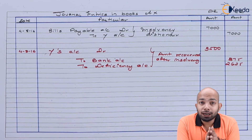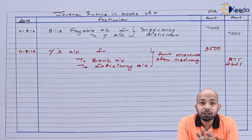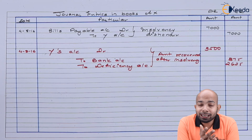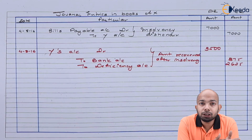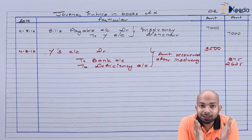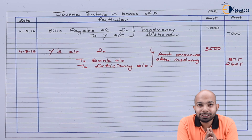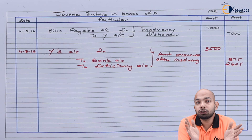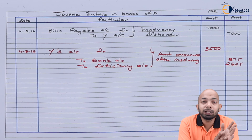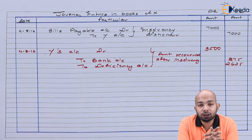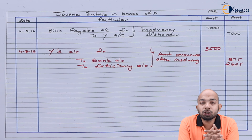I hope this illustration gave you a lot of understanding about how to solve a problem when there is insolvency — especially when the amount is shared between two people — and how to go about clearing out the journal entries. This video gave you clarity about accommodation of bill, and in addition to it, insolvency and deficiency account creation. Thank you for watching. Stay tuned with Ekeda and keep subscribing to Ekeda.